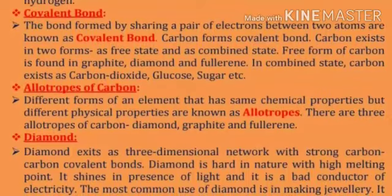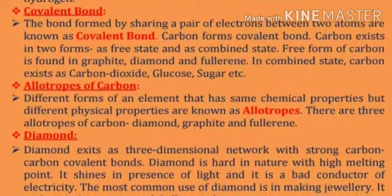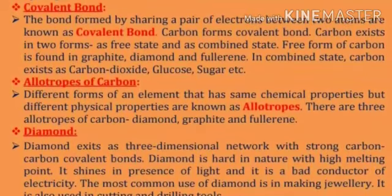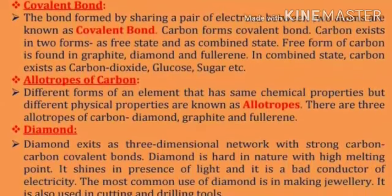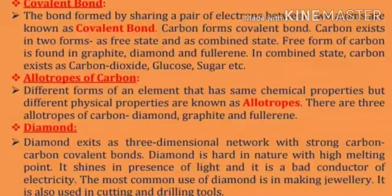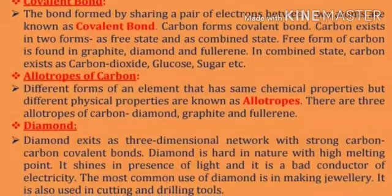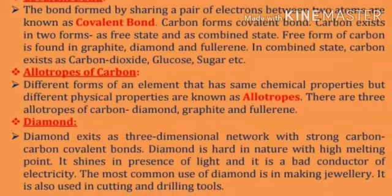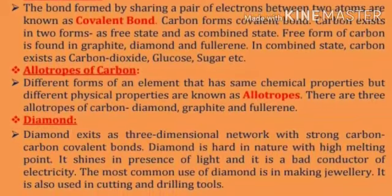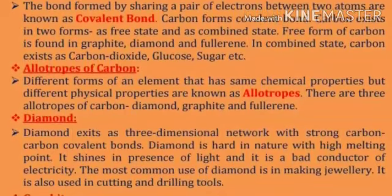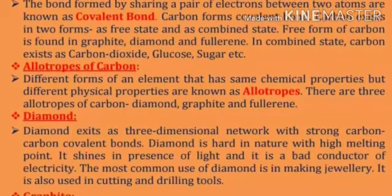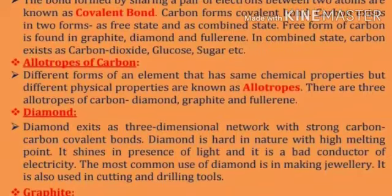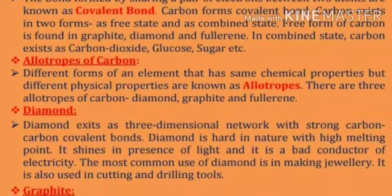Carbon exists in two forms: as free state and as combined state. The free form of carbon is found in graphite, diamond, and fullerene. In combined state, carbon exists as carbon dioxide, glucose, sugar, etc.